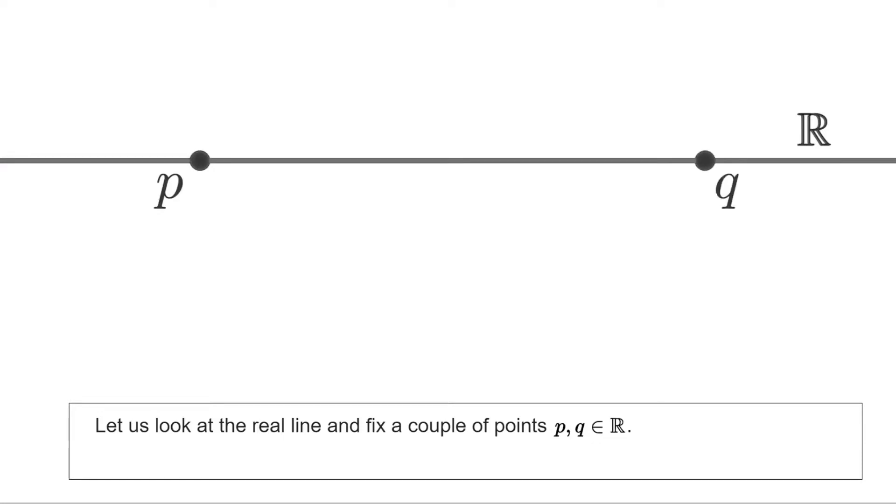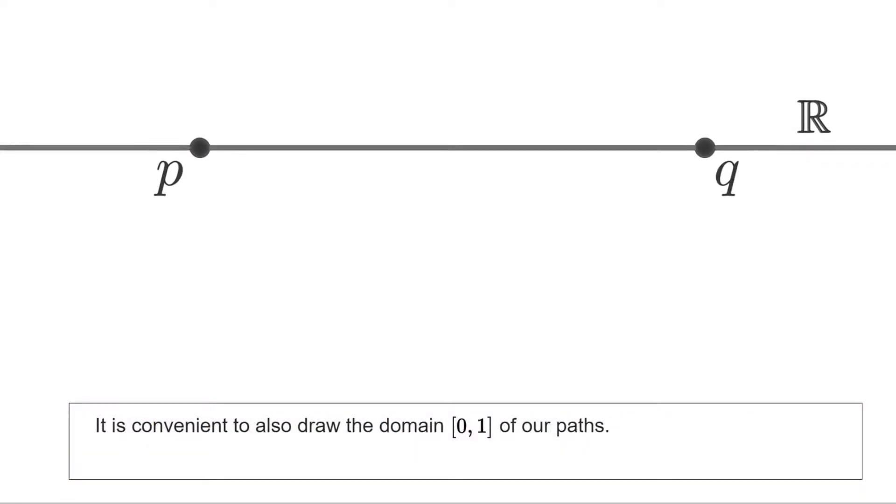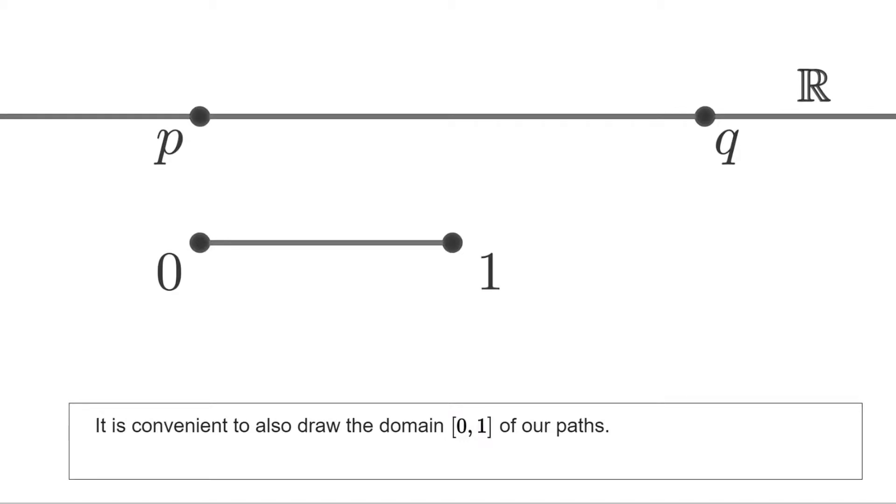Let's focus now on the real line. We fix two points P and Q in R, and even though we are drawing them as distinct points, we don't need to do this. You may as well make the same reasoning with P being equal to Q. Our goal is proving Proposition A that studies paths that begin at P and finish at Q. Since our paths are maps parametrized by the unit interval, it is probably best if we draw the unit interval as well. Recall that each path should take 0 to P and 1 to Q.